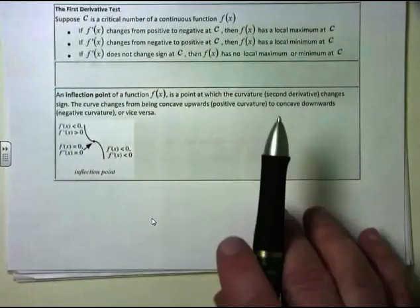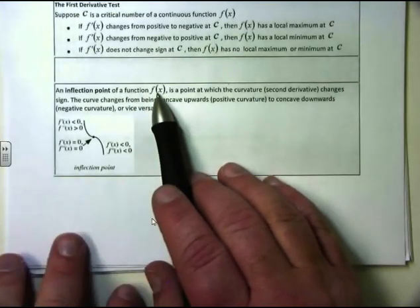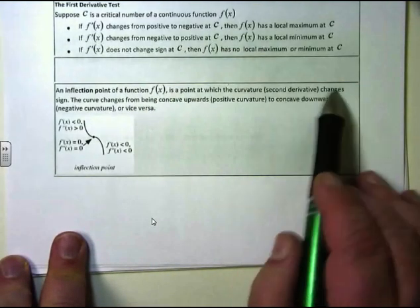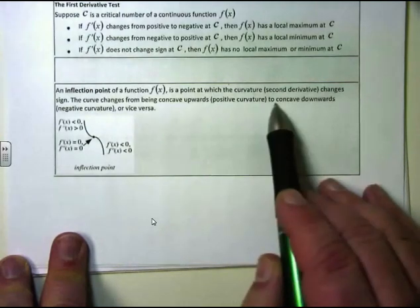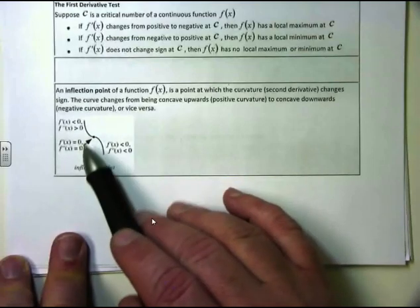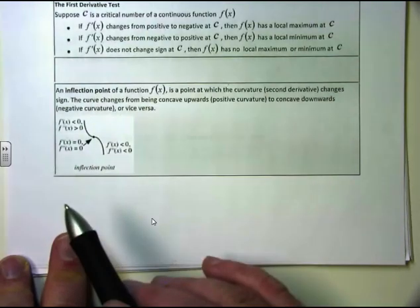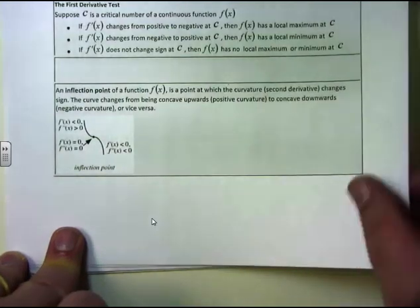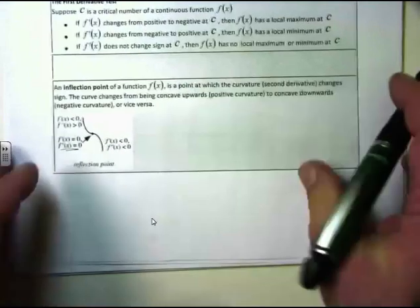One more definition: an inflection point. A critical point is where the derivative equals 0 or where the derivative does not exist. An inflection point is a point on f(x) where the curvature — the second derivative — changes signs. The curve changes from being concave upward (positive curvature) to concave downward (negative curvature), or vice versa. To find an inflection point, take the second derivative, set it equal to 0, and solve.